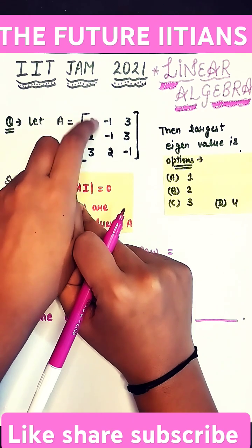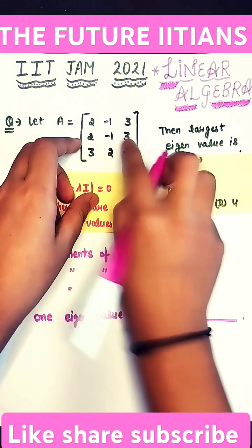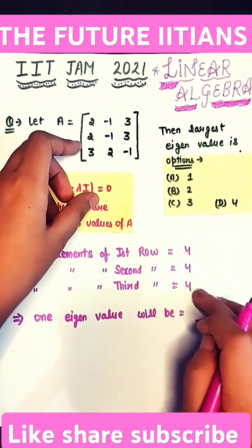The sum of elements of the first row, if we check, will be 4. 2 minus 1 is 1, 1 plus 3 is 4. Similarly, the second row sum is also 4, and the sum of elements of the third row is also 4.